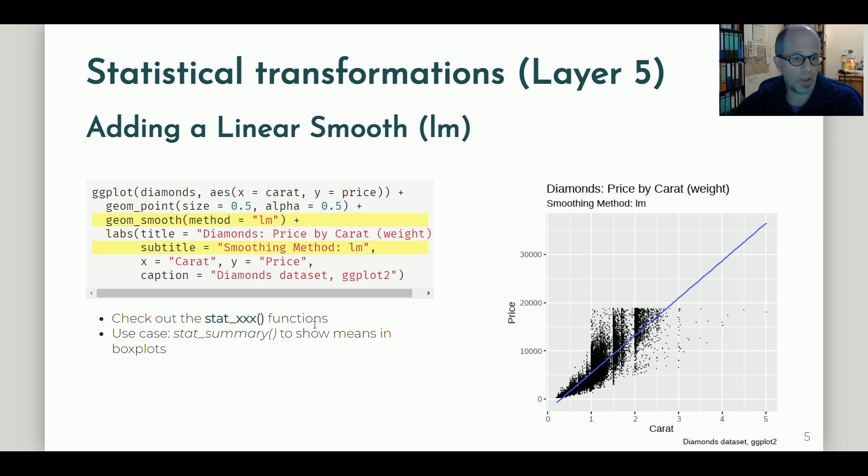First, let me say that statistical transformations can come with the geom function that you see above, geom_smooth, but you can also check out the stat_family of functions to apply more transformations. A use case would be to use the stat_summary function to show means in box plots. You know that box plots by default only display medians and sometimes it's nice to add means for comparison.